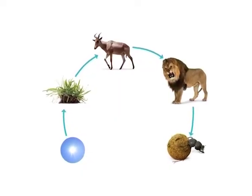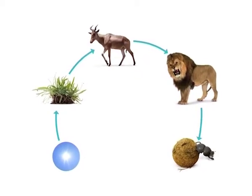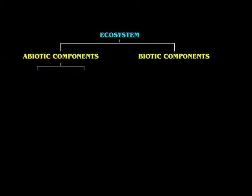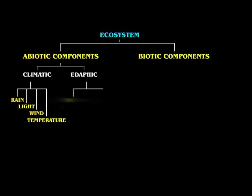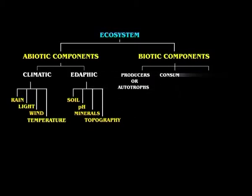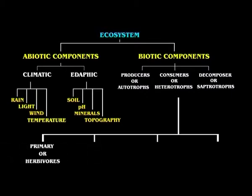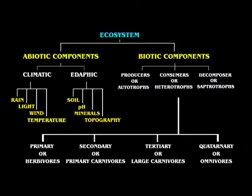These interactions among the producers, consumers, and decomposers are called trophic interactions, composed of trophic levels in the energy pyramid and represented in the food chain. The ecosystem can be divided into abiotic components and biotic components. Abiotic components include climatic components such as rain, light, wind, temperature, and edaphic components such as soil pH, minerals, and topography. Biotic components include producers or autotrophs, consumers or heterotrophs, and decomposers or saprotrophs. Consumers can be divided into primary consumers or herbivores, secondary consumers or primary carnivores, tertiary consumers or large carnivores, and quaternary consumers or omnivores.